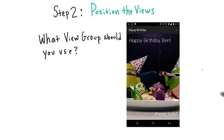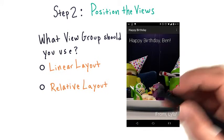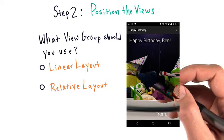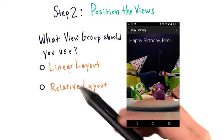Speaking of which, what view group should you use? You only know about two of them, so which is it? Linear layout or relative layout?